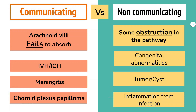Non-communicating hydrocephalus is a condition that results when the ventricular system does not communicate with the arachnoid villi due to some obstruction in the normal pathways of CSF flow. Consequently, CSF is produced in the ventricular system but cannot flow to the arachnoid villi to be reabsorbed. Such obstruction can occur when pathways are blocked by congenital abnormalities of the brain, tumour or cyst, inflammation from infection, or any other condition that interferes with the patency of these pathways.